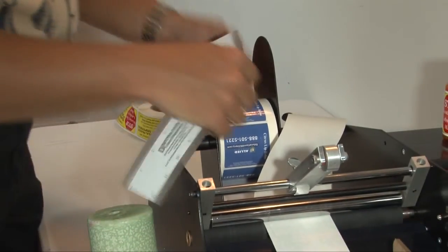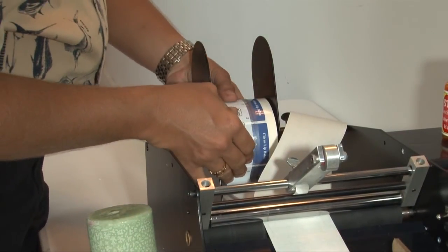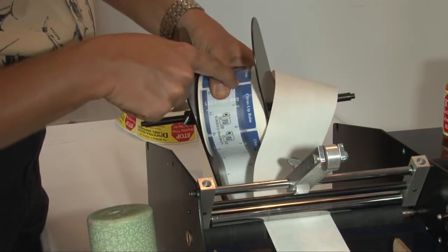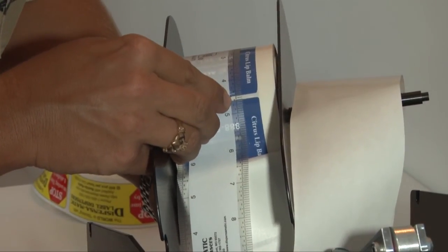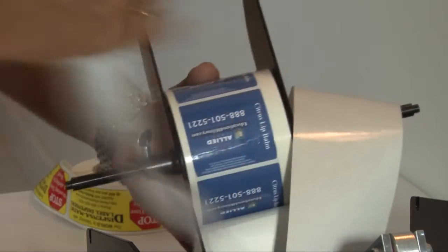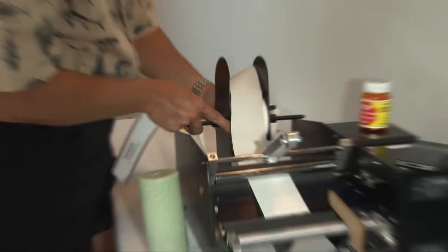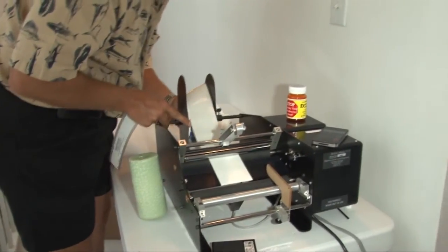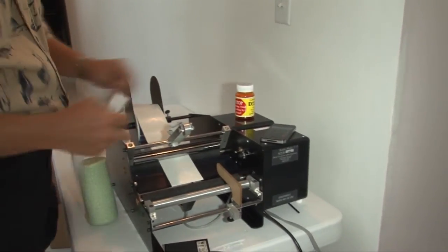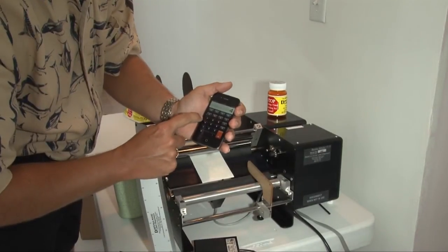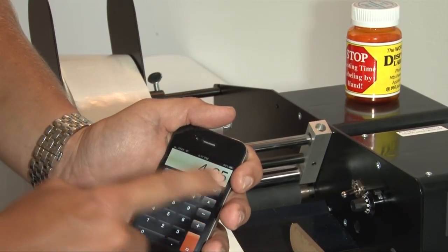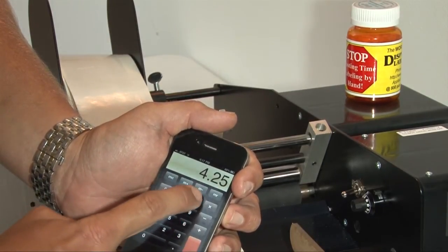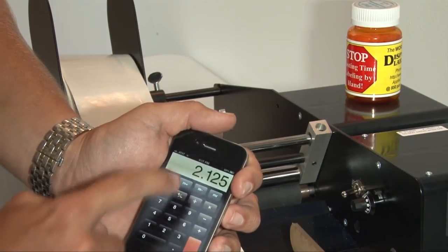The next dimension we need is the length of both labels. So what we want to do is we want to measure at the start of label 1 to the start of label 1 on the next set. And that dimension on these labels is 4 and 5 eighths inches. Now we'll want to subtract that from the circumference, which was 8.875. And we're going to subtract 4.625, which was the distance of both labels. And that comes out to 4.25.